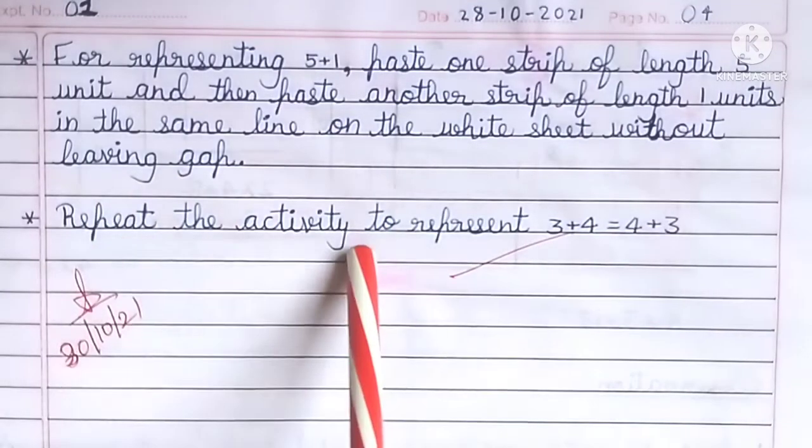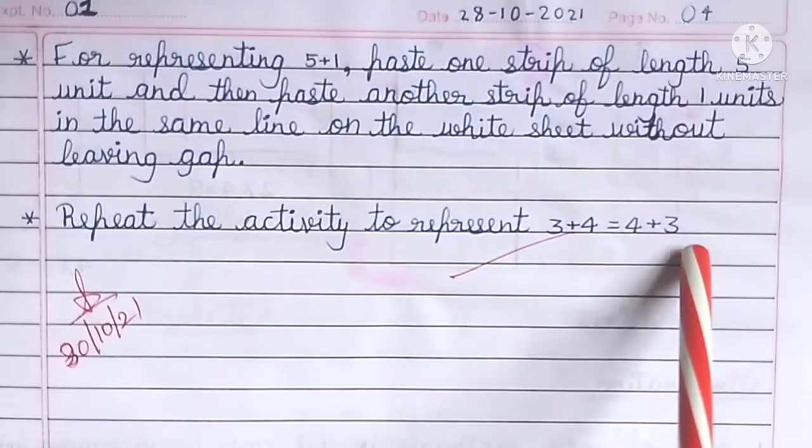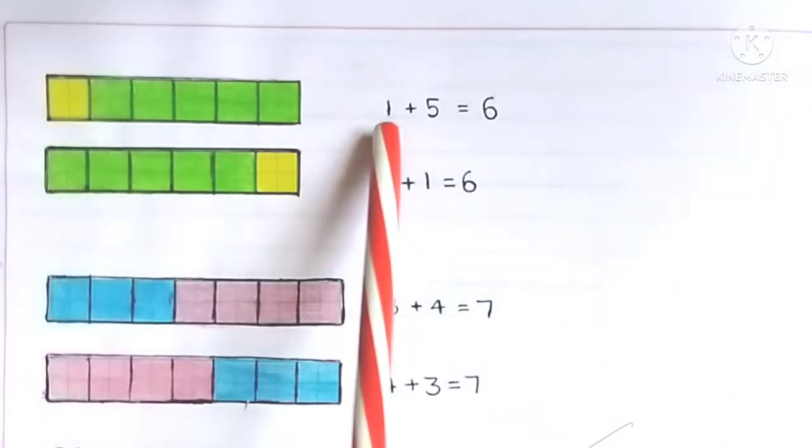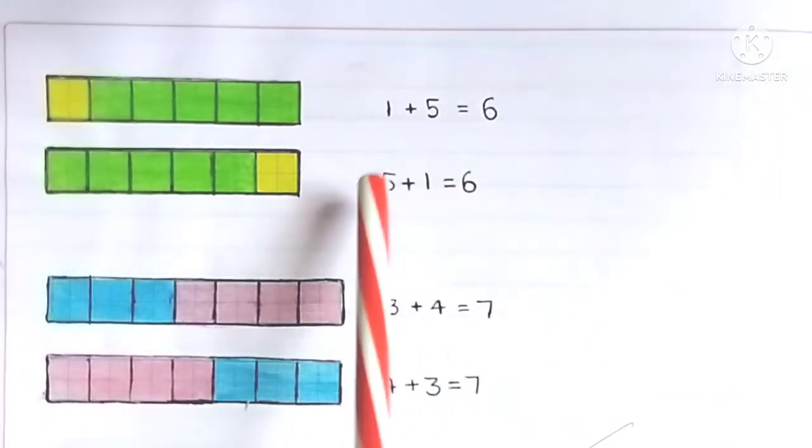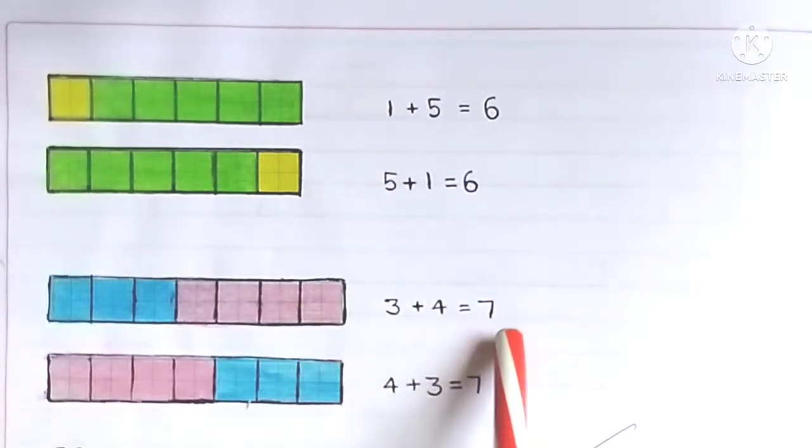Repeat the activity to represent 3 plus 4 equals 4 plus 3. Results: 1 plus 5 equals 6, 5 plus 1 equals 6, 3 plus 4 equals 7, 4 plus 3 equals 7.